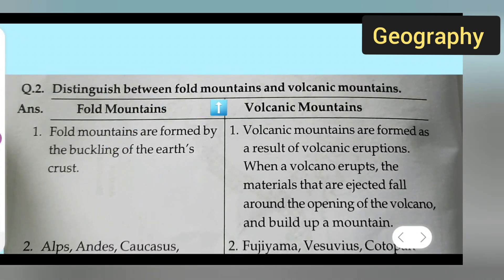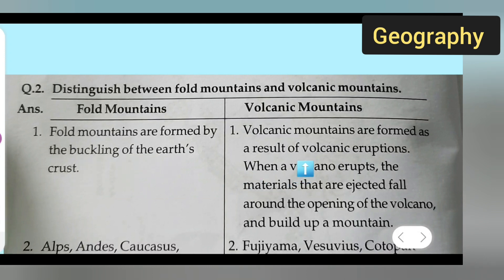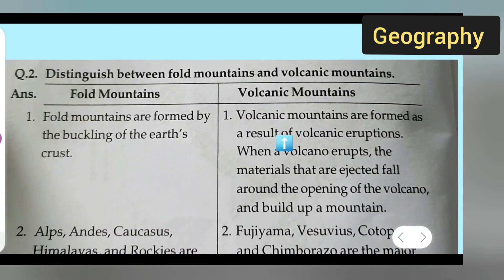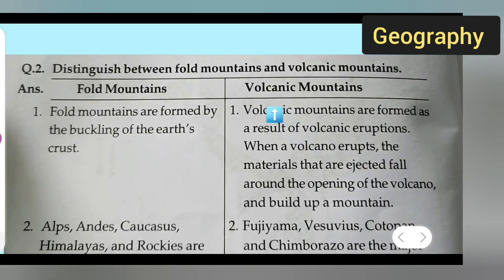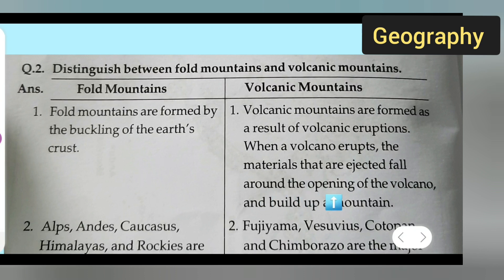The answer: under fold mountains, first point — fold mountains are formed by the buckling of the earth's crust. Under volcanic mountains, first point — volcanic mountains are formed as a result of volcanic eruption. When a volcano erupts, the materials that are ejected fall around the opening of the volcano and build up a mountain.